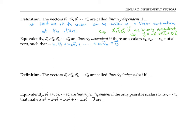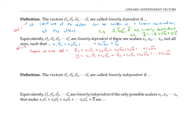Let's see why these two definitions are equivalent. Suppose we have definition one: one of the vectors can be written as a linear combination of the others — say v3 can be written as a linear combination of the other vectors. Then we can get an expression like the one in definition two just by subtracting v3 to the other side. We have exactly the expression from definition two, with the c's functioning as the x's. Notice that these x's are not all zero, because the coefficient of v3 is negative one, which is not zero.